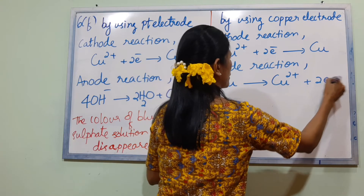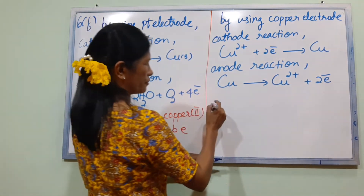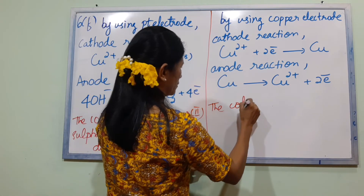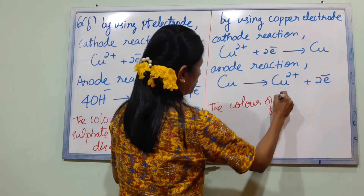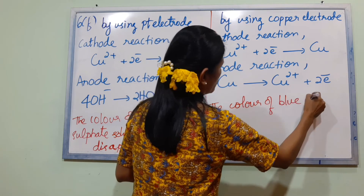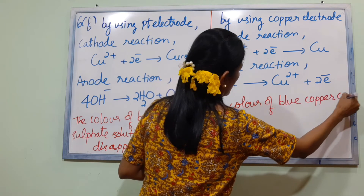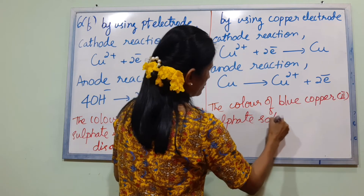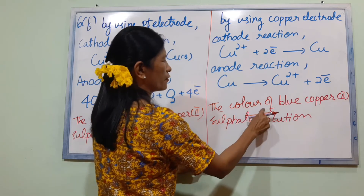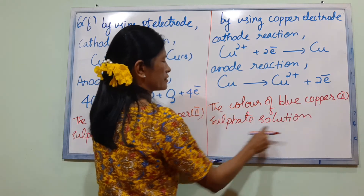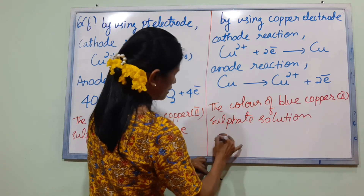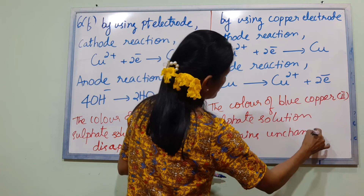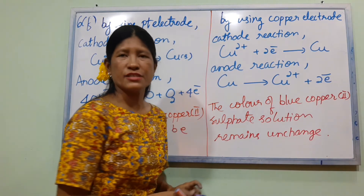Using copper electrodes, the blue color of the copper sulfate solution remains unchanged, as copper dissolves from the anode at the same rate it is deposited at the cathode.